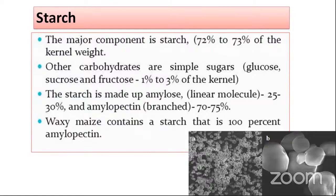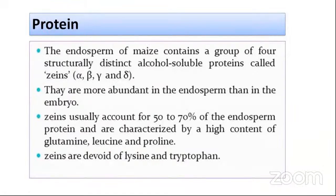In the case of waxy maize, it contains 100 percent amylopectin, or a negligible amount of amylose. The starch granules, as shown in the picture, when examined under a scanning electron microscope, appear in a characteristic form for corn starch. Then comes the protein — the protein of maize is known by the name zein, because the scientific name of maize is Zea mays.